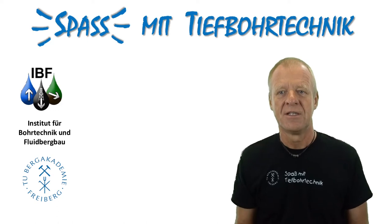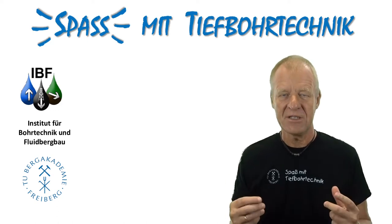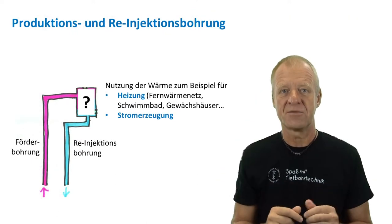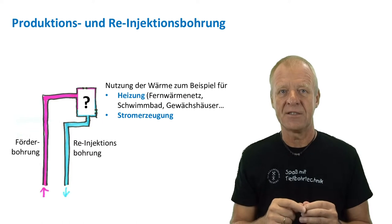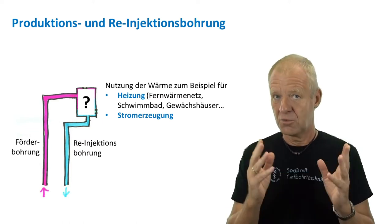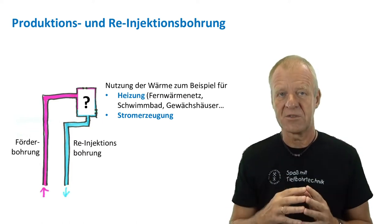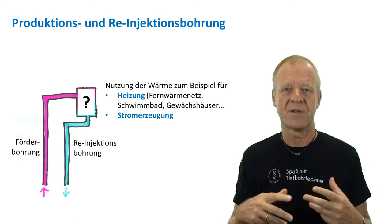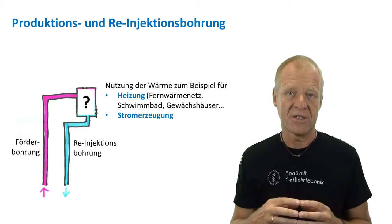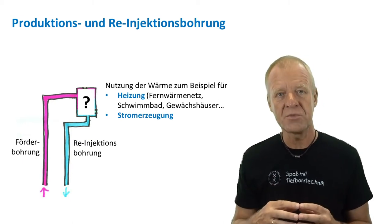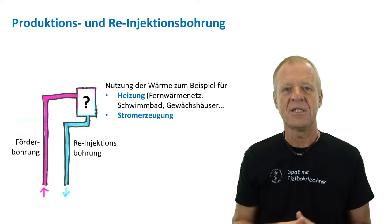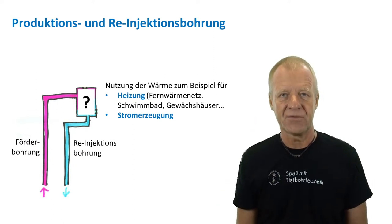Every geothermal power plant requires at least one production well which brings hot water from the ground to the surface. The power plant on the surface uses the heat of the water, for example to heat buildings, and in the best case even to generate electricity. Then the cooled water is re-injected back into the ground through the so-called re-injection well.